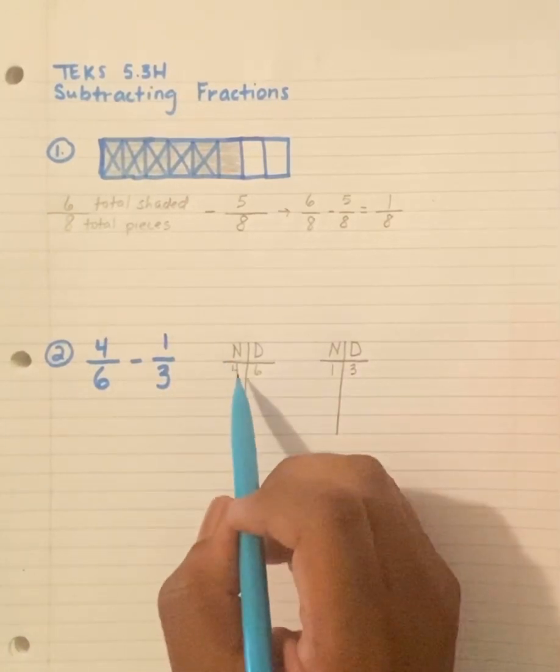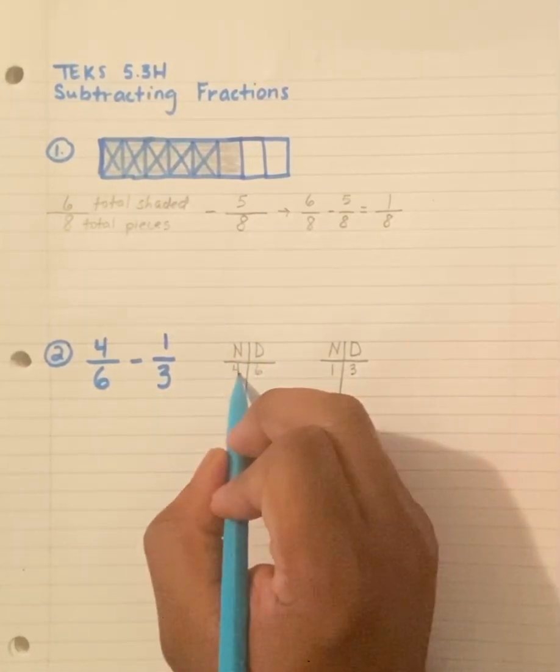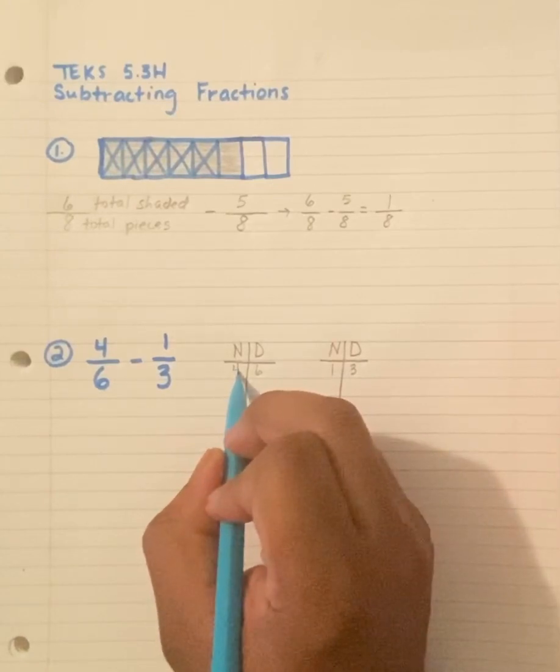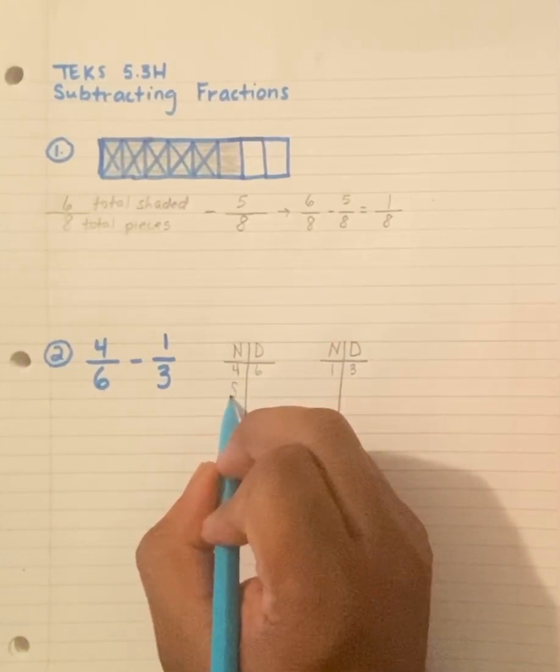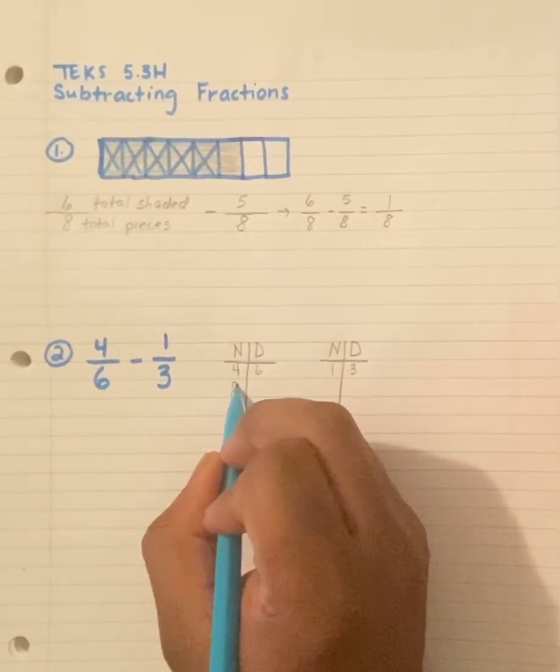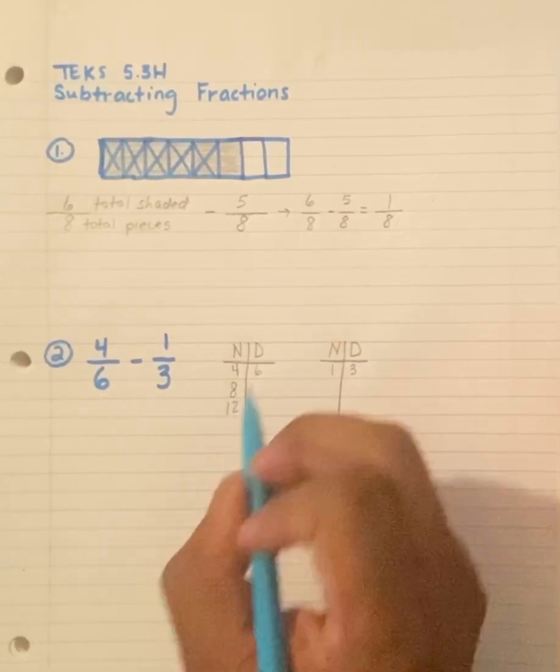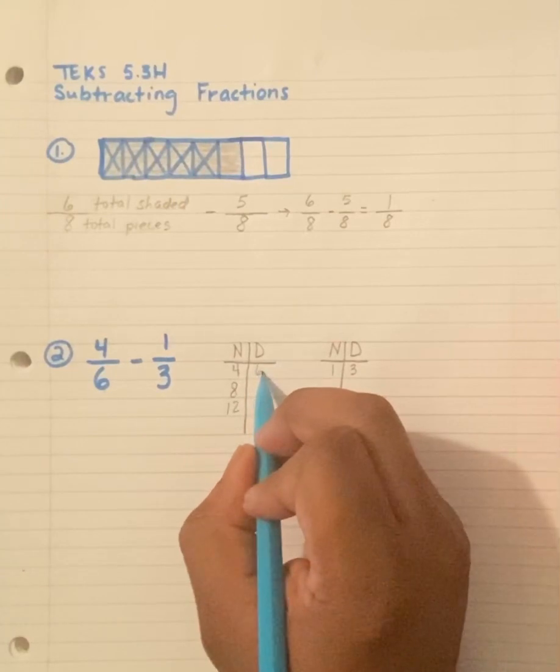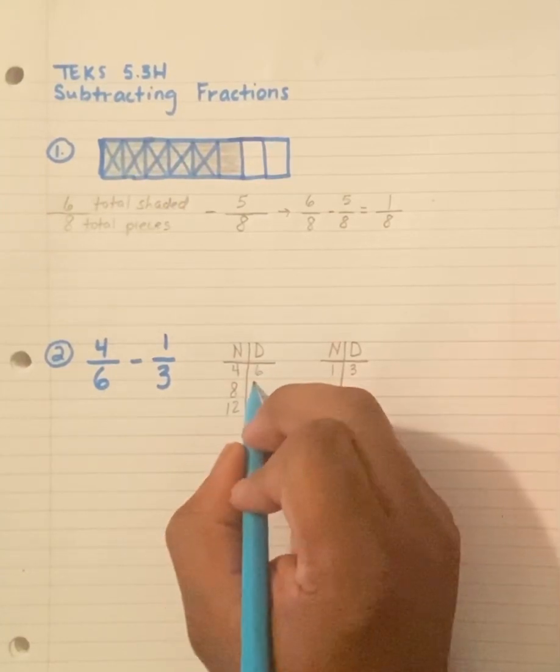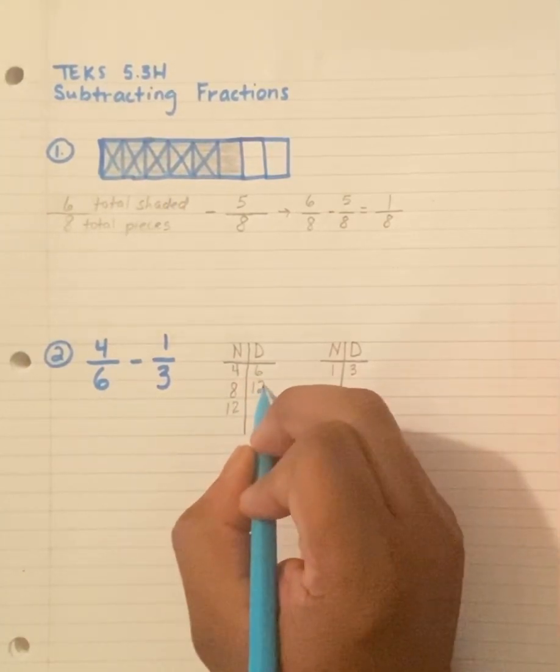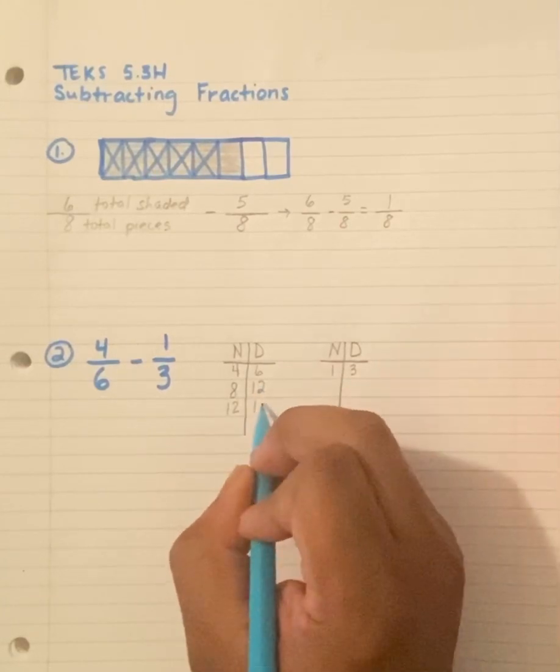Now I'm going to skip count by each number. So since this is 4, I'm going to skip count by 4. So 4, 4 plus 4 is 8, 8 plus 4 is 12. I'm going to do the same with my 6s. 6, then 6 plus 6 is 12, 6 plus 12 is 18.